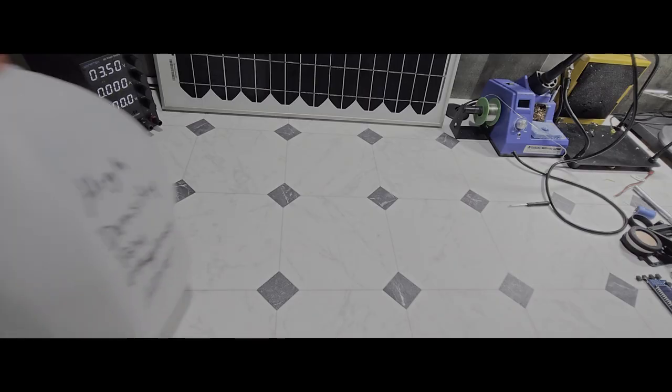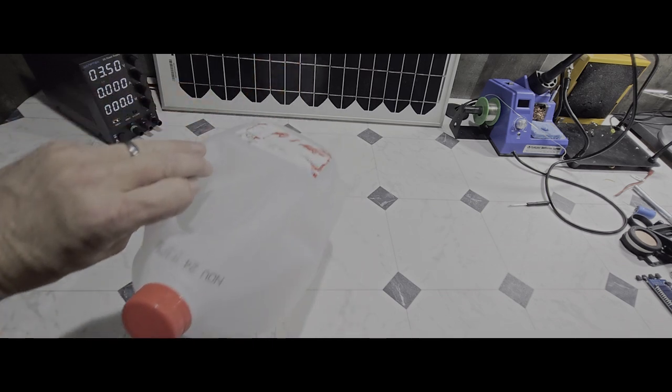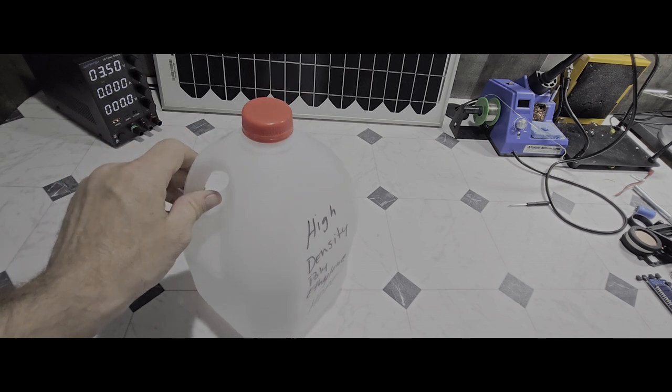And for the electret material, I'm using high density polyethylene HDPE plastic. Milk or water jugs are a great inexpensive source for this.